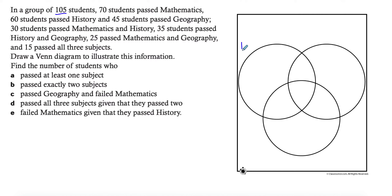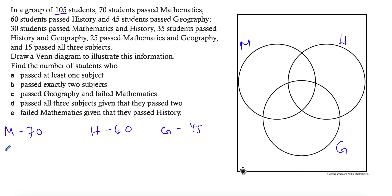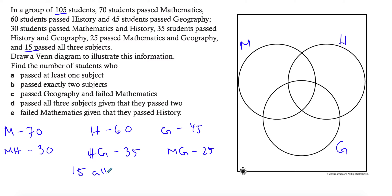The three sets are mathematics, history, and geography. Maths has 70 students who passed, history has 60, geography has 45. Maths and history intersection is 30, history and geography is 35, maths and geography is 25, and all three is 15. Since we have the triple intersection, 15 goes in the center. If you didn't have 15, you'd start with the same logic of X.